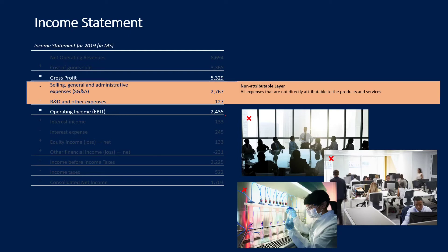After the non-attributable layer, we arrive at EBIT, or operating income. That means this is where our core business ends — everything that comes below has nothing to do with our core business, but with financing and taxation.